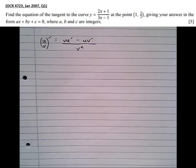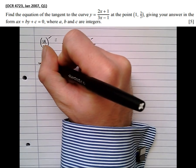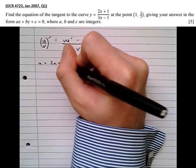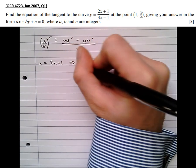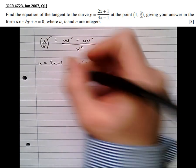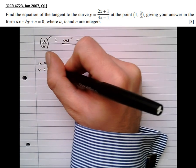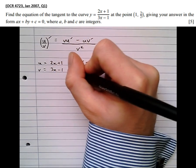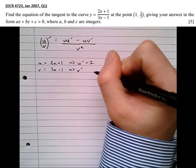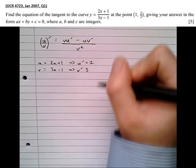So I can tell in this one I'm going to have to use the quotient rule because it's a fraction. 2x plus 1 is the numerator and 3x minus 1 is the denominator. So our u, the numerator, is 2x plus 1, which means that our differential of u is 2. Our v is 3x minus 1, which means that our differential of v is just 3.